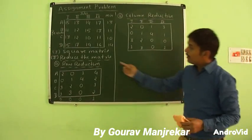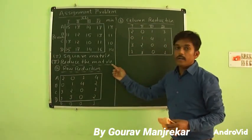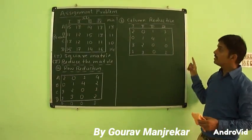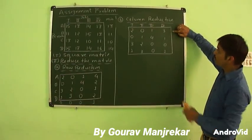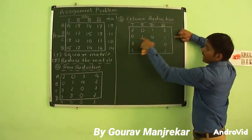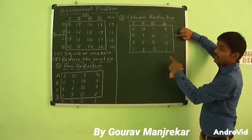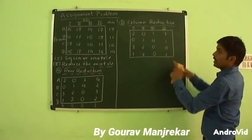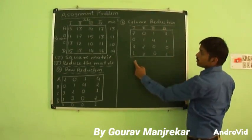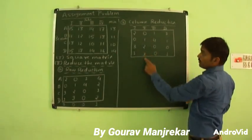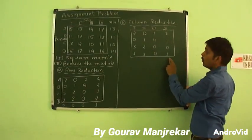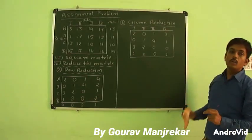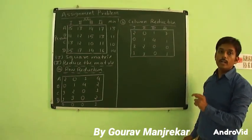After reducing the matrix, we check that each row and each column contains at least one zero. The 1st row has one 0, the 2nd row has one 0, the 3rd row has two 0s, and the 4th row has one 0. Similarly, the 1st column has one 0, the 2nd column has one 0, the 3rd column has two 0s, and the 4th column has one 0. So there is at least one zero in each row and each column.